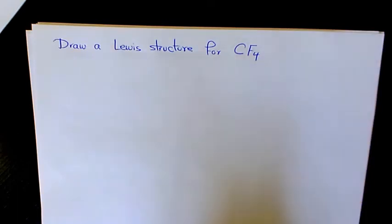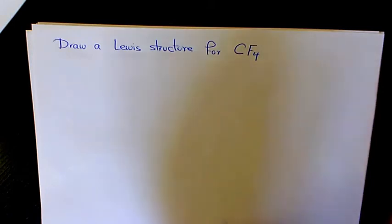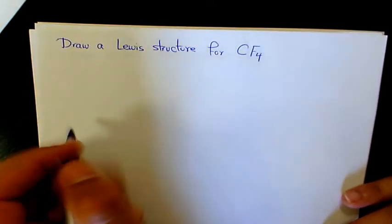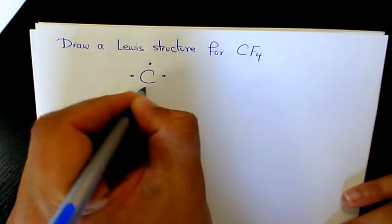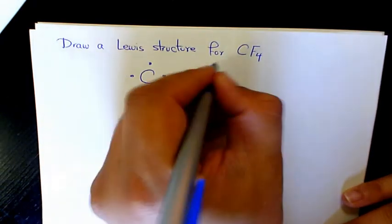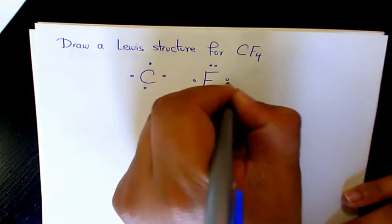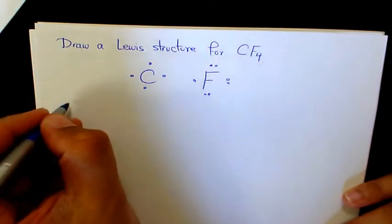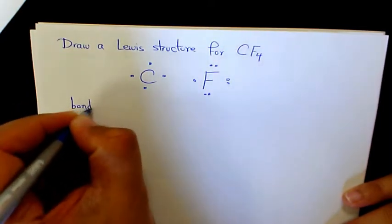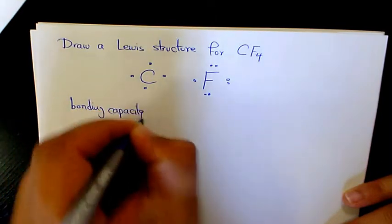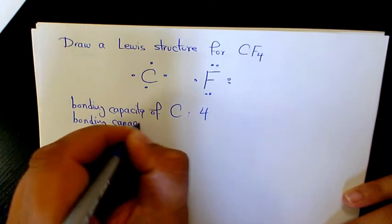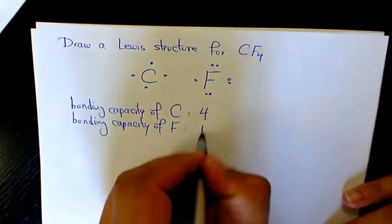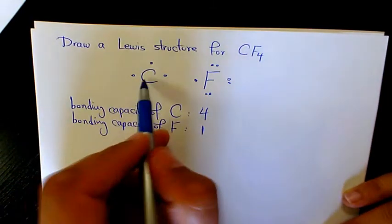What's up guys, this is Massey, welcome to another video. In this video I want to show you how to find out the Lewis structure of CF4, carbon tetrafluoride. The first thing we need to do is identify the central atom, which is usually the element with the highest bonding capacity. Carbon has four valence electrons and fluorine has seven valence electrons. The bonding capacity of carbon is four and the bonding capacity of fluorine is one, so carbon is the central atom.